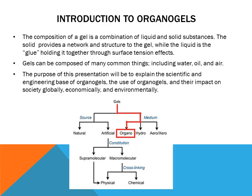Introduction to Organogels. The composition of a gel is a combination of liquid and solid substances. The solid provides a network and structure to the gel, while the liquid is the glue holding it together through surface tension effects. Gels can be composed of many common things, including water, air, and oil.